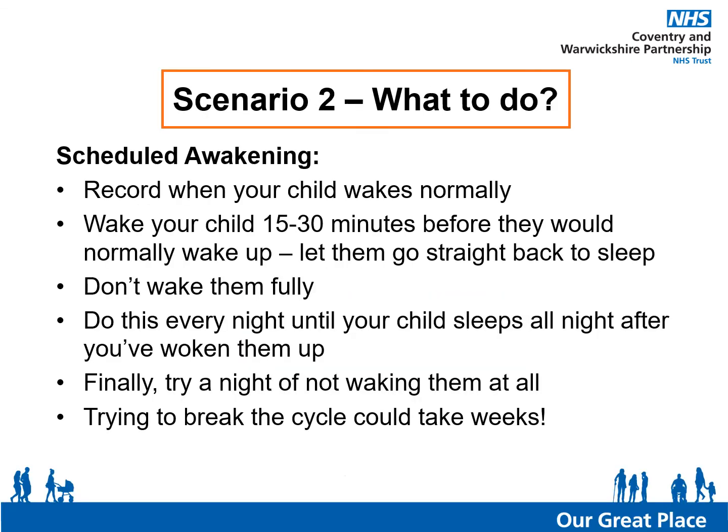An option for tackling scenario 2 is to trial scheduled awakenings, used to reset a child's internal body clock. Use a diary to identify what time nighttime wakings usually occur. If they wake at virtually the same time every night, try waking the child 15 to 30 minutes before and let them go back to sleep — don't wake them fully, just allow them to open their eyes. Do this every night until they are sleeping right through after you have woken them, then try a night without waking them to see if the sleep pattern has extended. This process could take weeks, but it will be worth it — it's all about persevering.